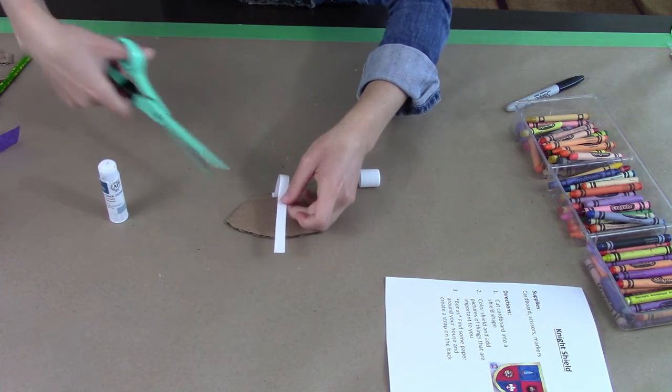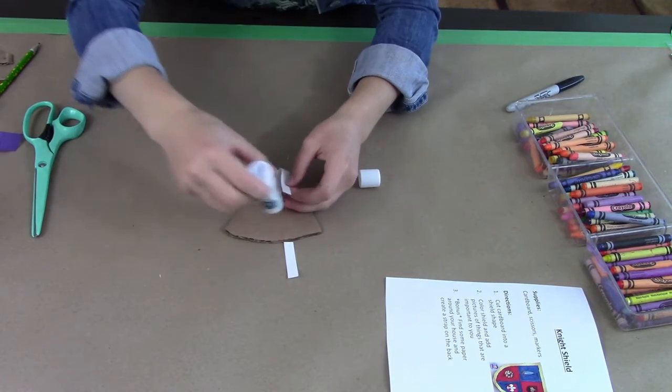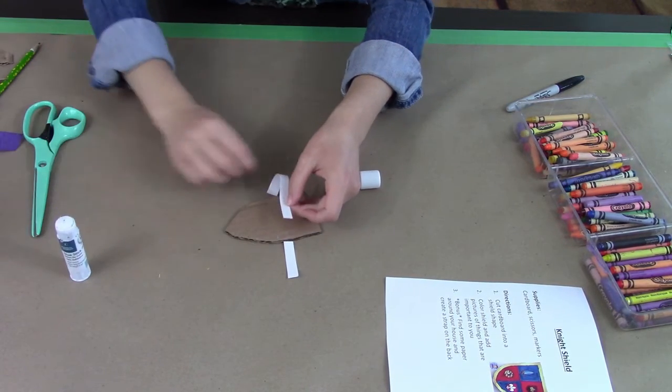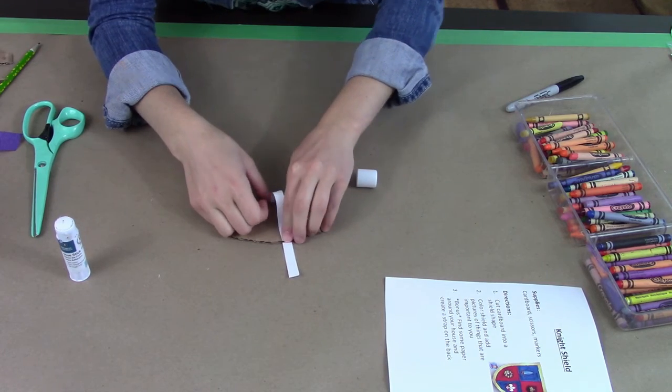Then I'll kind of gauge the size of where I need it to be, cut the excess of the white paper off, add a little bit of glue on the other side, and secure this white piece of paper down on either side of the shield on the back of it.